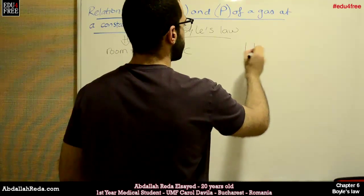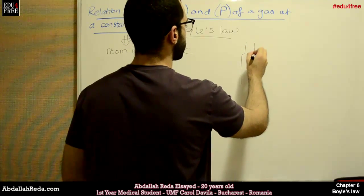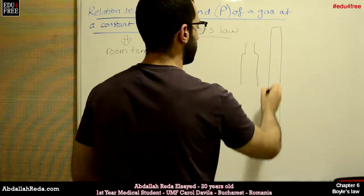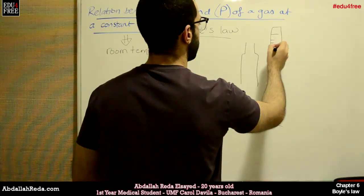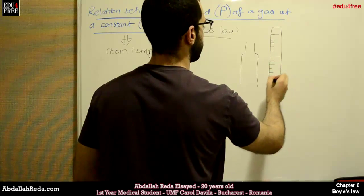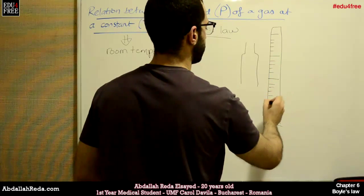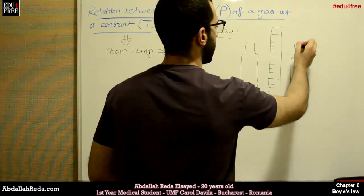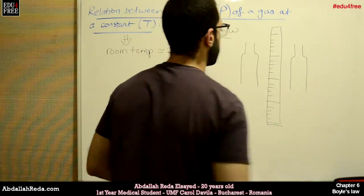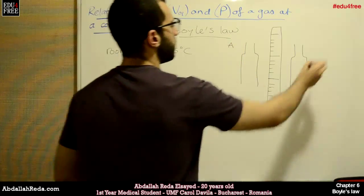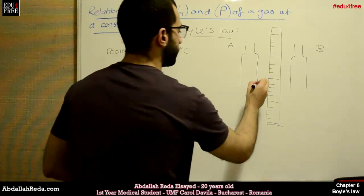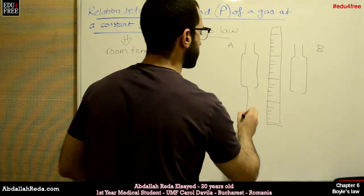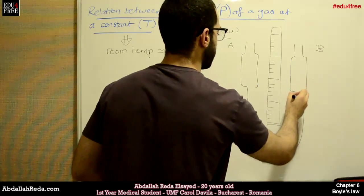We have two burettes and a scale like this. And a burette is a tube that has two openings from both sides. We have burette A and burette B. And we will connect both burettes with a connecting rubber tube like this.